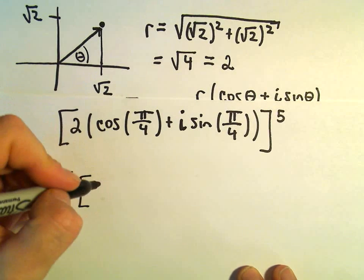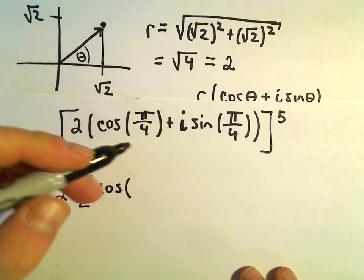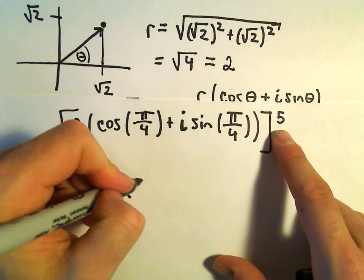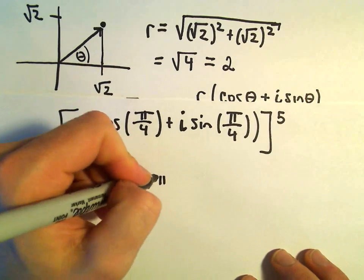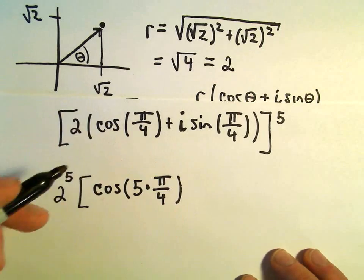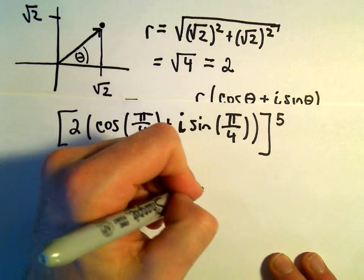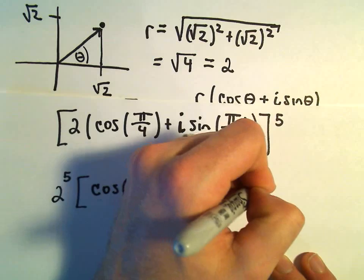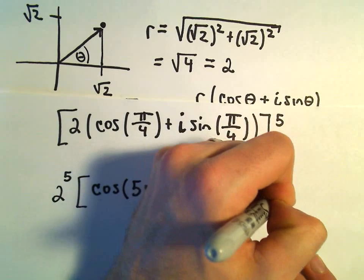So we've got 2 to the fifth. We would have cosine of, we just take our exponent and we multiply it by the original value of theta. So we'll do the same thing here. We'll get 5 times π/4.